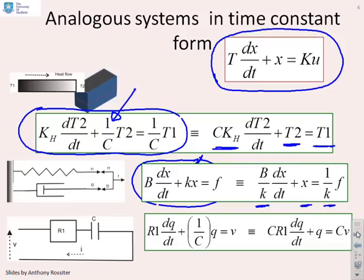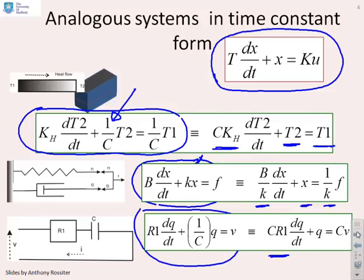What about the resistor-capacitor system? If you look at the earlier videos, you'll see this was the model we had: R1·dq/dt plus 1/C·q equals v. If I want to put that into time constant form, I can multiply throughout by capital C, and this is what I'll get: C·R1·dq/dt plus q equals C·v.